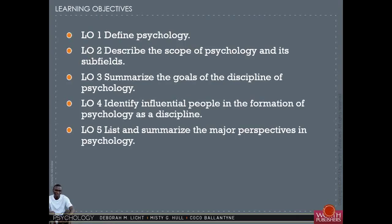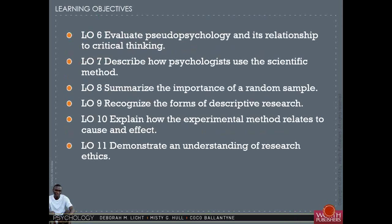We'll begin by looking at our learning objectives. During this session, we will define psychology and look at the scope of psychology and some of its sub-fields. We'll summarize the goals of the discipline, identify influential people, and list and summarize the major perspectives of psychology. Additionally, we're going to evaluate pseudo-psychology, describe how psychologists use the scientific method, summarize the importance of the random sample, recognize the forms of descriptive research, explain how the experimental method relates cause and effect, and demonstrate an understanding of research ethics.